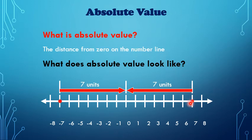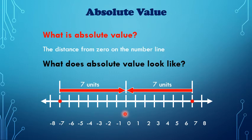To find the absolute value of any integer — either positive or negative — the answer will always be a positive number. So whether the integer is positive or negative, the absolute value will always equal a positive integer.